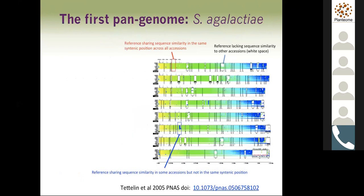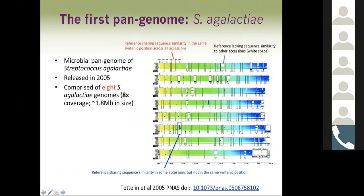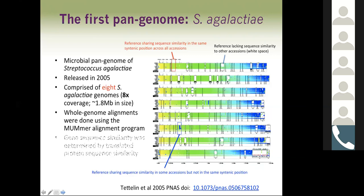The first pan genome was the Streptococcus agalactiae, a microbial pan genome. It was released in 2005 and comprised of eight genomes sequenced at 8x coverage, each genome about 1.8 megabases in size. Whole genome alignments were done using the Mummer alignment program, and gene sequence similarity was determined by translated protein sequence comparisons.